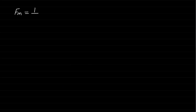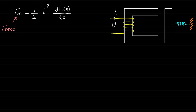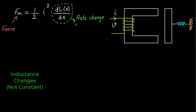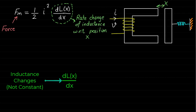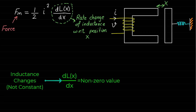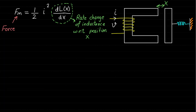Let's focus on this important force expression: Fm = ½I² · dL(x)/dx. This expression shows that if the coil of the magnetic system is excited by current I, the force can be developed only if the inductance changes or varies with respect to the position x. That means, if the inductance varies with respect to position x, the rate of change of inductance dL(x)/dx will be a non-zero value, and therefore the force will also be non-zero. When using this force equation, we need to always remember the following two points.